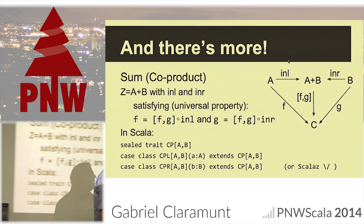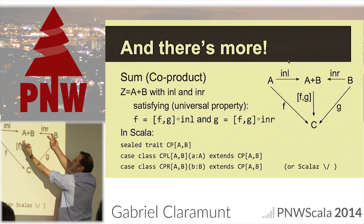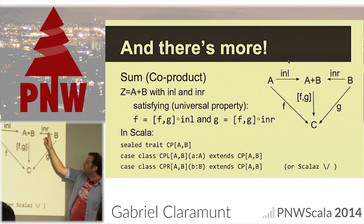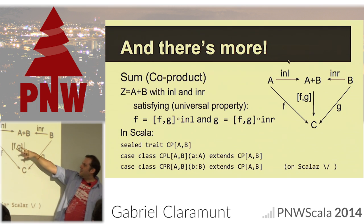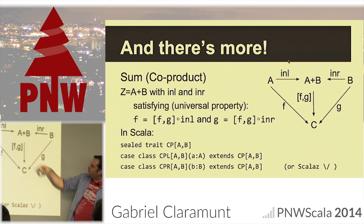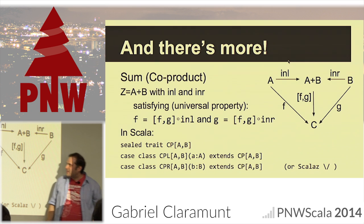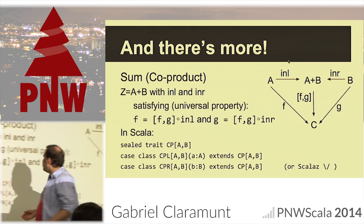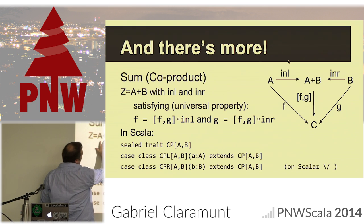Here we reverse everything. Instead of projections we have injections — these arrows are called injections. We still have f and g but now they are reversed. And then we have the unique arrow that makes things work.